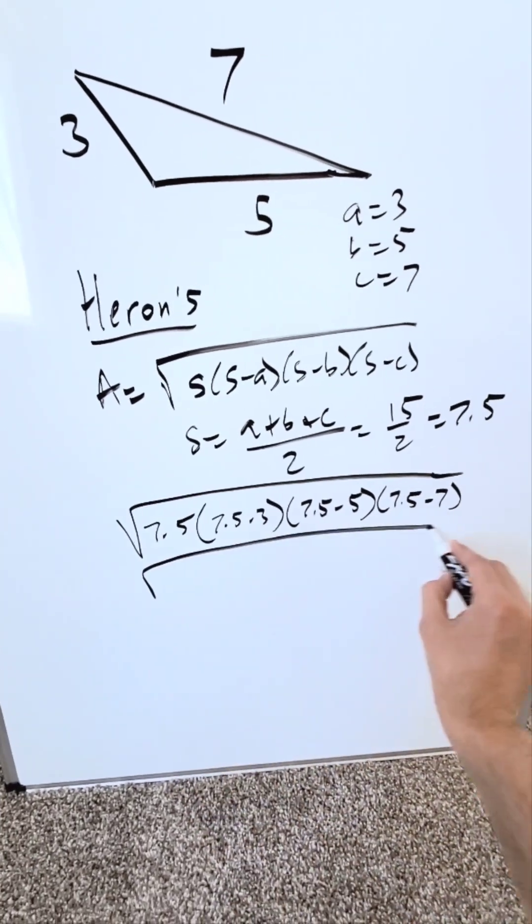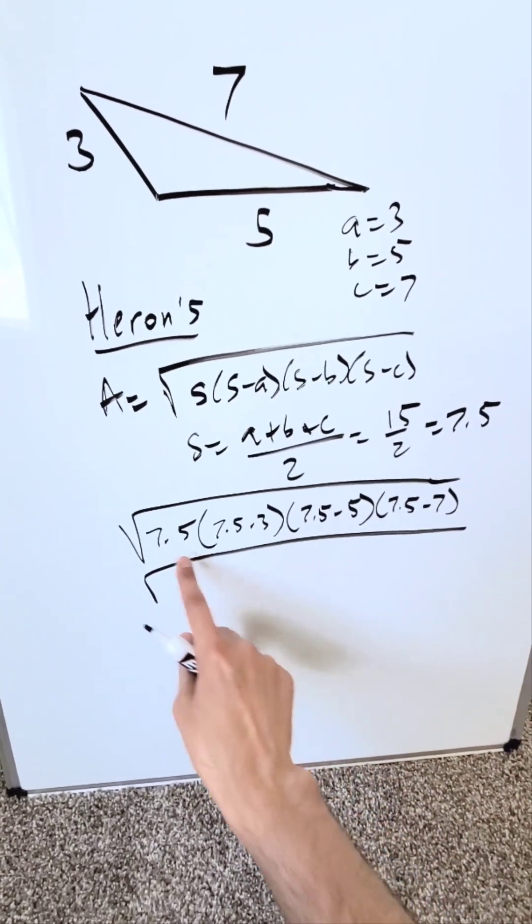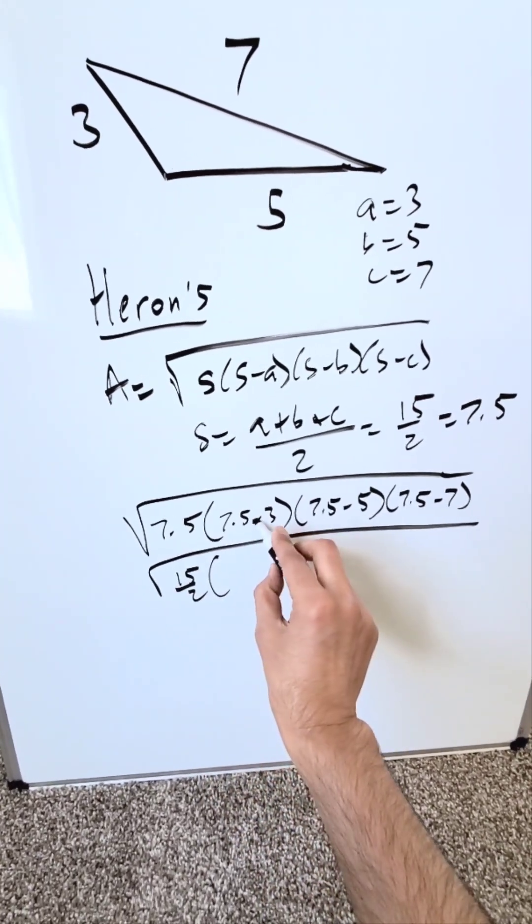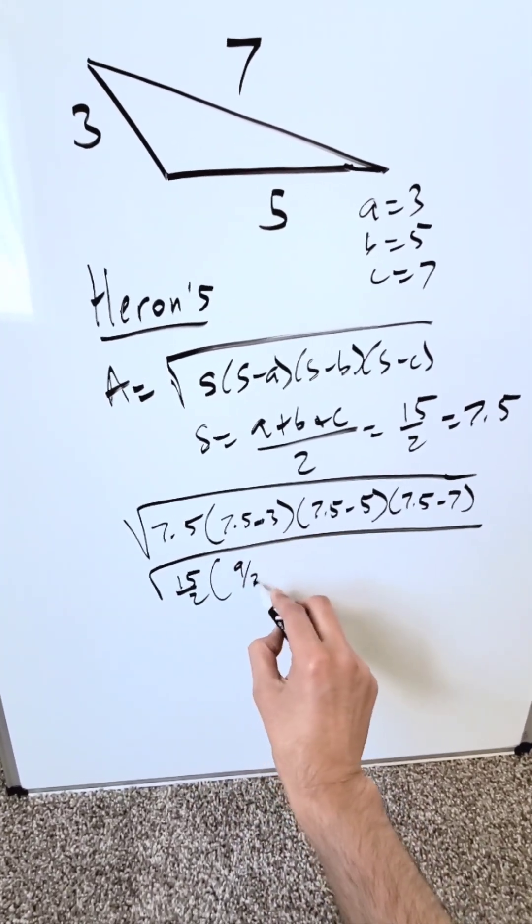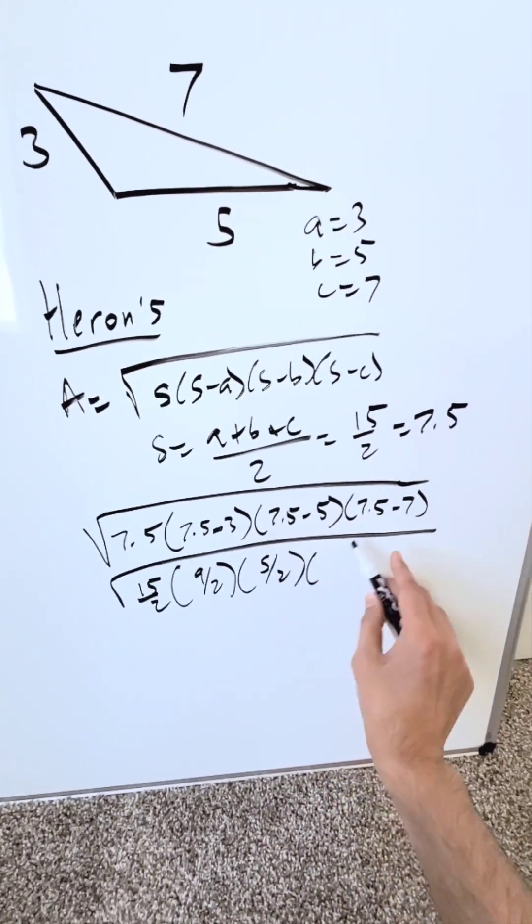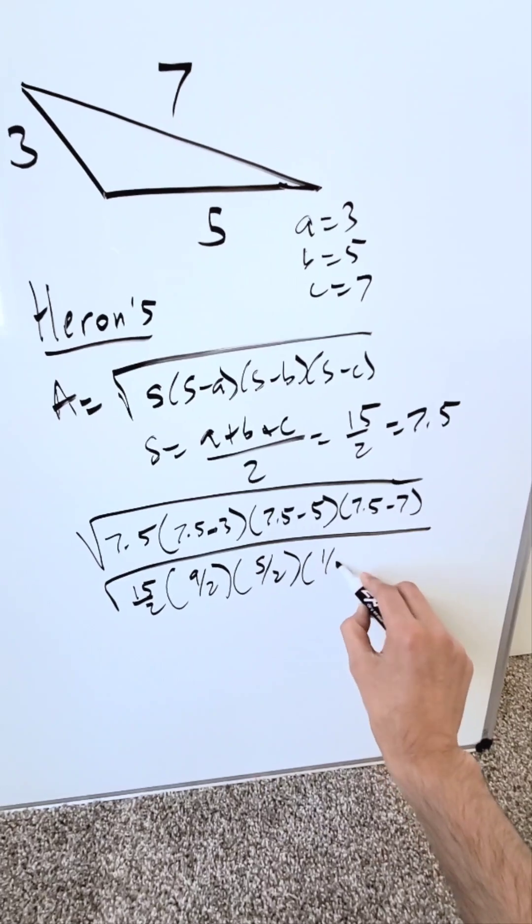Now I'm going to bring in my fraction items because it will be easy for simplifying. 7.5 is 15 over 2. 7.5 minus 3 is 4.5 but you know that to be 9 over 2. 7.5 minus 5 is 2.5. That's 5 over 2. 7.5 minus 7 is a half. I'll just write a half.